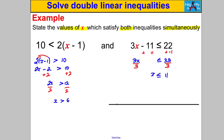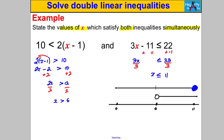For the second inequality, add 11 to both sides to get 3x ≤ 33, then divide by 3: X is less than or equal to 11. On a number line, mark 6 with an open circle with an arrow right, and 11 with a filled circle with an arrow left. They overlap between 6 and 11, so the answer is 6 < X ≤ 11.